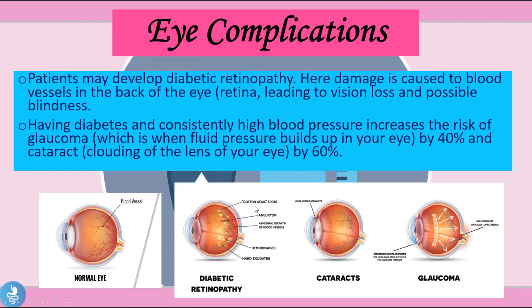In diabetic retinopathy we see cotton wool spots, aneurysms in tiny vessels, abnormal growth of blood vessels, hemorrhages, and hard exudates. Cataracts occur when the lens of the patient's eye becomes cloudy, and glaucoma involves increased pressure within the eye. This high fluid pressure damages the optic nerve, leading to decreased vision and possibly blindness.